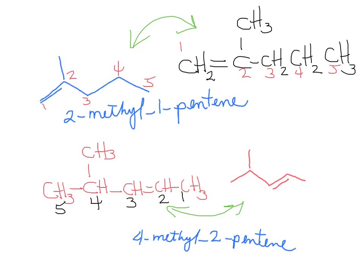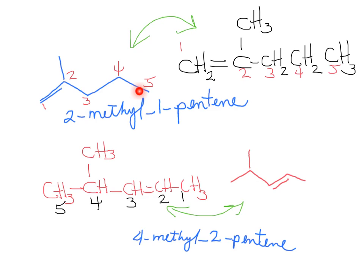In these two examples, we have alkenes — one where the double bond is at the beginning carbon, so that is a one, and it has five carbons long. It's a 1-pentene. One is to state the position of the double bond, pent because it's five carbons long, and ene because it belongs to the family of alkenes.